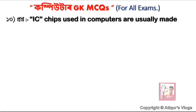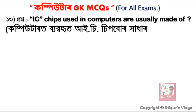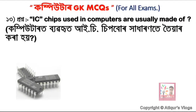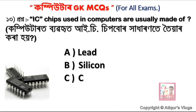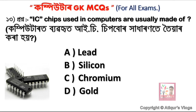Question 13: IC chips used in computers are usually made of — option A Lead, option B Silicon, option C Chromium, and option D Gold. The correct answer is option B — IC chips are made of Silicon.